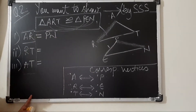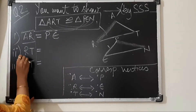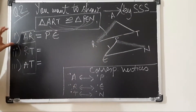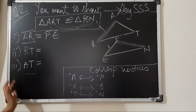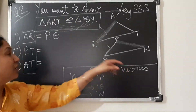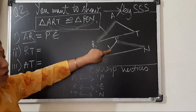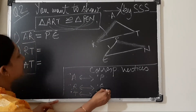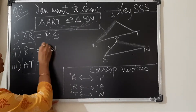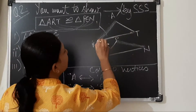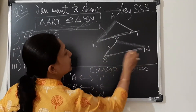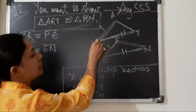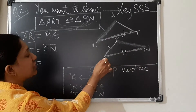Now move to side RT. We have to prove the two triangles are congruent by side-side-side. So three sides of one triangle must equal the corresponding three sides of the other. For side RT: R is matching with vertex E, and T is matching with N. So side RT equals side EN. These two are the corresponding sides which are equal.